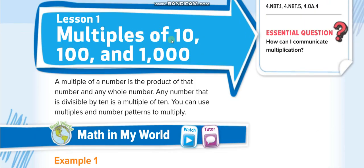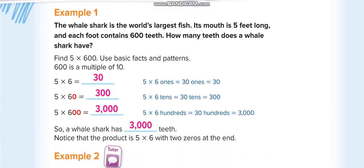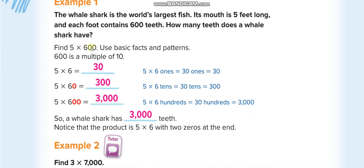In this lesson, it's very simple. Whenever we multiply with any number having zeros, what we do is just remove the zeros, multiply the basic numbers, and put the zeros back. Like the first example: 5 times 600 — just remove the two zeros and keep them in your pocket. Now 5 times 6 is 30, and we have two zeros in our pocket to put back, so the answer is 3,000.